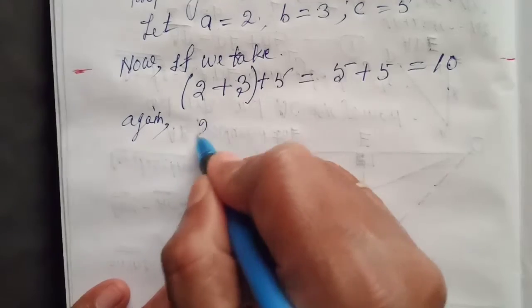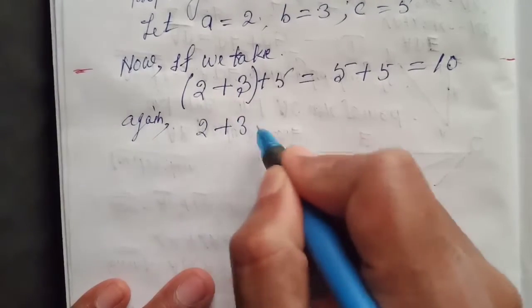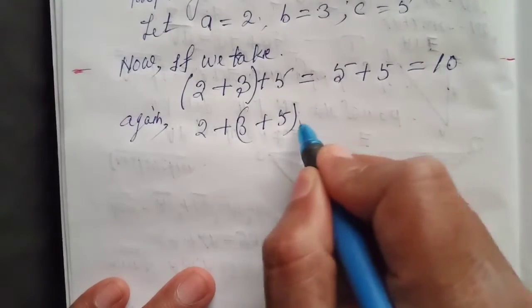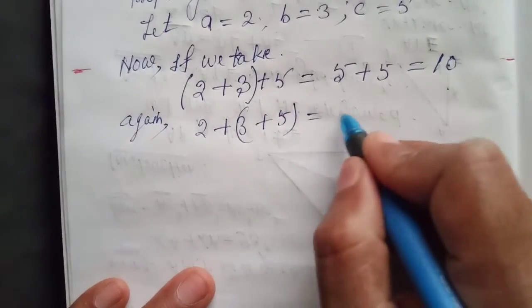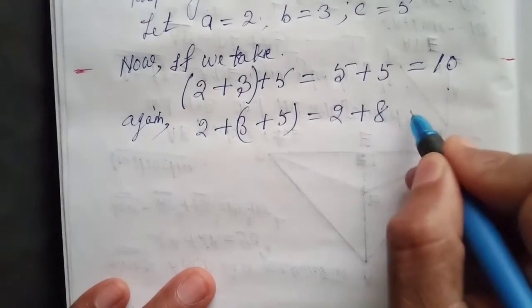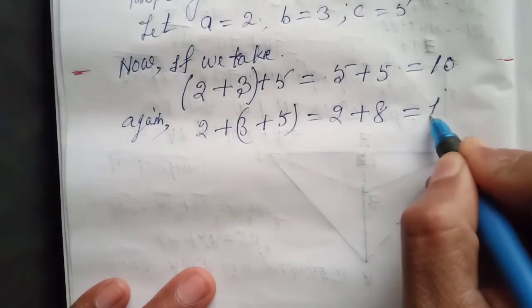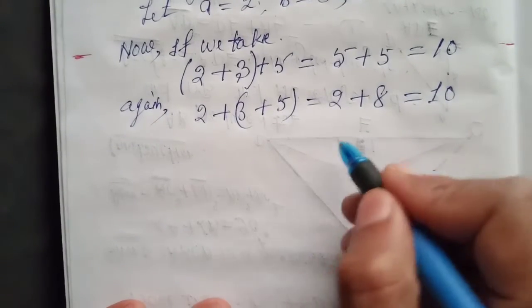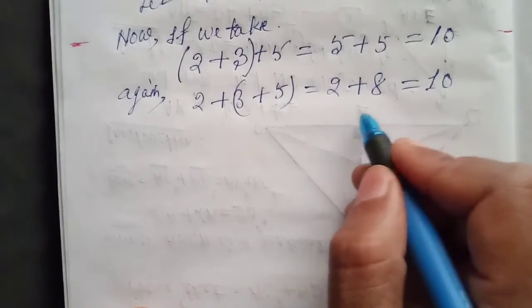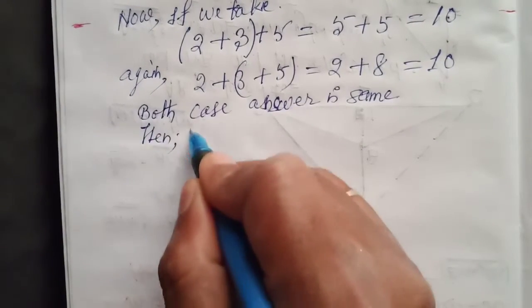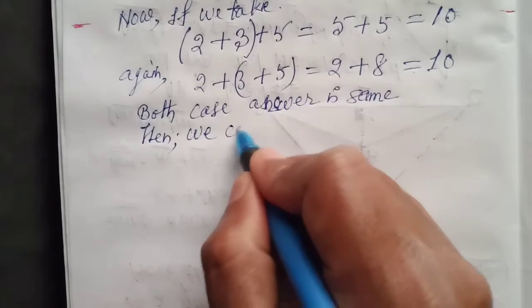Again, for the second case, 2 plus (3 plus 5) with the bracket taken in another position, then 2 plus 8 equals 10. In both cases, the answer is the same, so we can write: